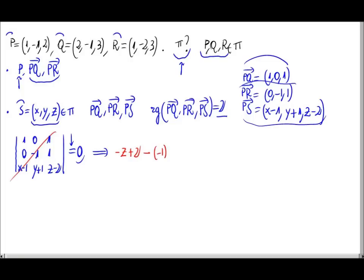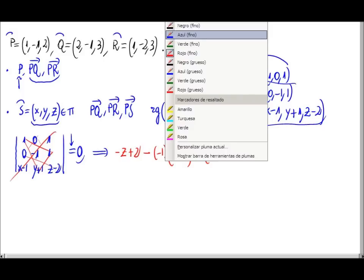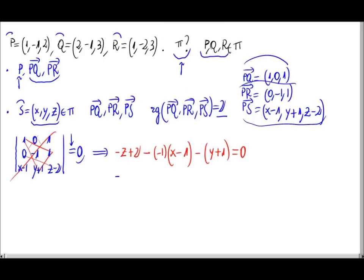Let's go with the negative ones. This diagonal would be 1 times minus 1 times x minus 1. And this triangle here is 1 times 1 times y plus 1. And the other triangle is 0. And everything would be equal 0. Here we would have minus z plus 2 minus minus x minus 1 minus y minus 1 equals 0.